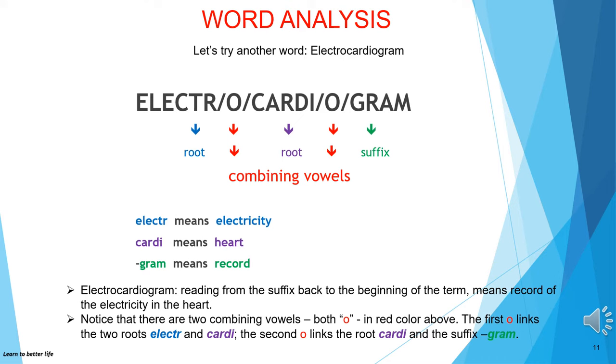Notice that there are two combining vowels, both O, shown in red. The first O links the two roots electr- and cardi-; the second O links the root cardi- and the suffix -gram.